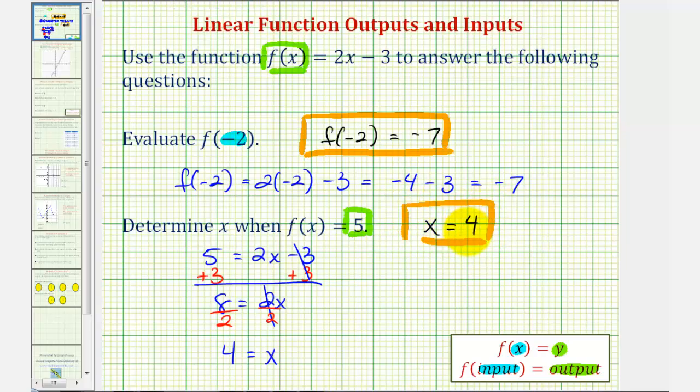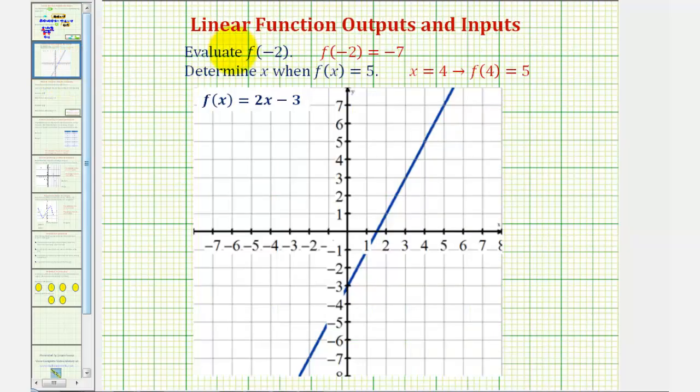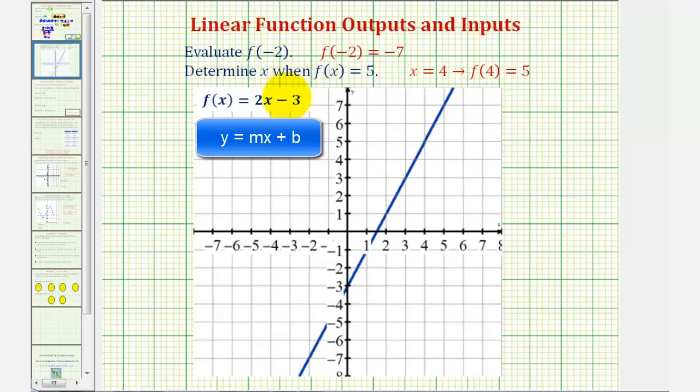Now before we go let's take a look at this graphically. If we graph the linear function f of x equals two x minus three notice how we have a y intercept of negative three and a slope of positive two. Here's our y intercept of negative three. Notice if we go up two units and right one unit this does verify that we have a slope of two.